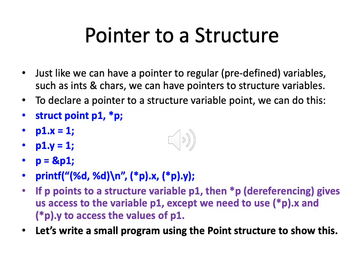Here is a small piece of code demonstrating pointers to structure variables. We write struct point p1, *p. Using the variable p1 we assign values: p1.x = 1 and p1.y = 1. Then we make the pointer point to p1. Using the pointer, we dereference and print the x and y components.